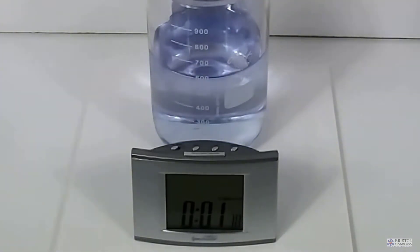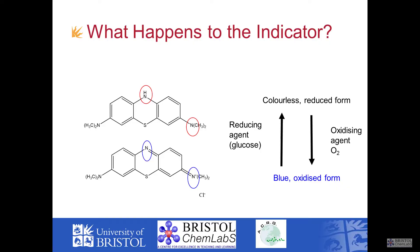Let's look at the equations and see what's going on. The first thing to note is that the top structure, the one shown earlier, is the reduced form of the indicator — the reduced form of methylene blue. Note the hydrogen on the central nitrogen atom, and that there is no charge on the right-hand side nitrogen atom. In the oxidized form, the nitrogen in the middle of the molecule has lost its hydrogen. Loss of hydrogen is reduction. On the right-hand side, the nitrogen has picked up a positive charge — it's lost an electron.